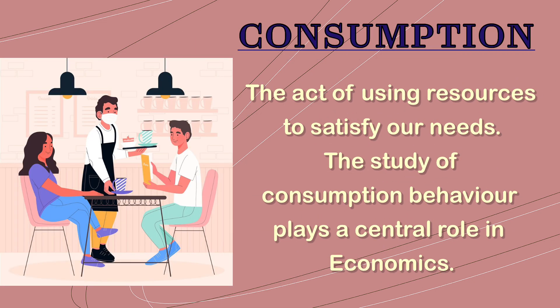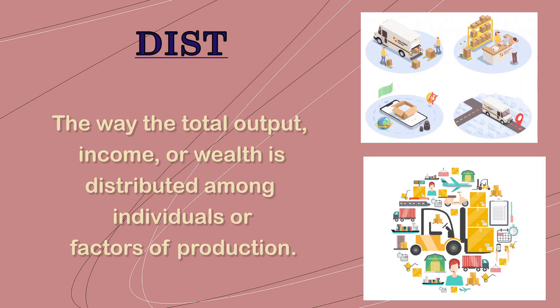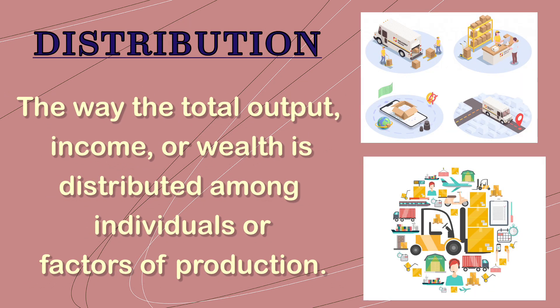Now let us look at three distinct components of economics: consumption, production, and distribution. The act of using resources to satisfy our needs is called consumption — for example, when we feel hungry we consume food. The process of making or manufacturing goods from raw materials or components is called production, where inputs are used to create an output.